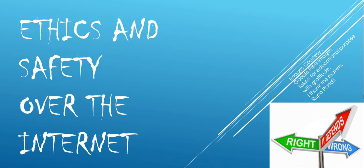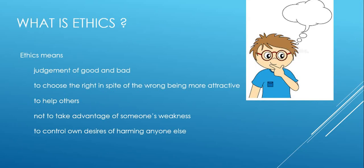This chapter is about how we can be ethical on the internet. Ethics means judgment of good and bad — to choose the right even when the wrong is more attractive, to be helpful, not to take advantage of someone's weakness, and to have control on our desires so we don't end up harming anybody.